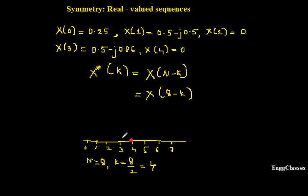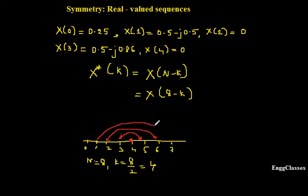For example, x(3) and x(5) are conjugate symmetric — x(5) is x*(3). Similarly, x(2) is conjugate symmetric with x(6), and x(1) is conjugate symmetric with x(7).